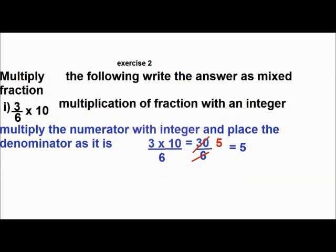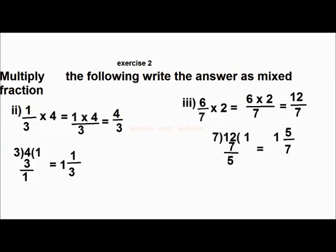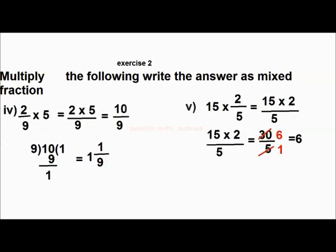Now some problems: multiply the following and write the answers as a mixed fraction. 3 by 6 into 10. This is a multiplication of a fraction with an integer. Multiply the numerator with the integer and place the denominator as it is. That becomes 3 into 10 by 6, which is 30 by 6. Here are some other same-type problems — follow them.